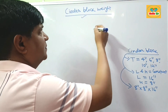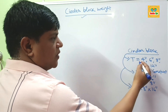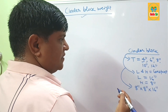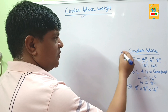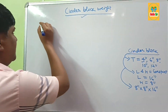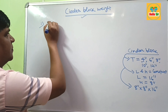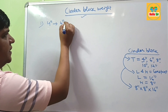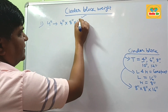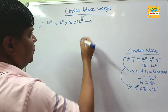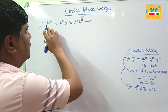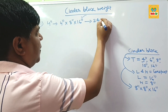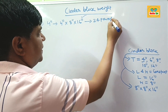Now let's look at the weight of different cinder blocks. The smallest block is the 4-inch block, with dimensions of 4 inches thick, 8 inches in height, and 16 inches in length. How much does a 4-inch cinder block weigh? It weighs around 24 pounds. When you convert to kilograms, it is about 11 kg.